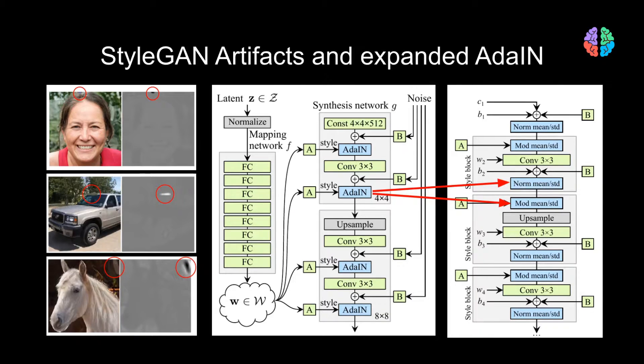Let's first split the adaptive instance normalization block into its two parts which are modulation and normalization layers. And then let's also include the weights and biases to the style blocks which are W and B.